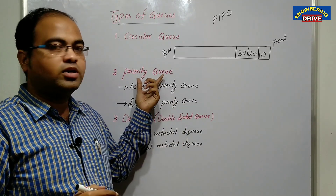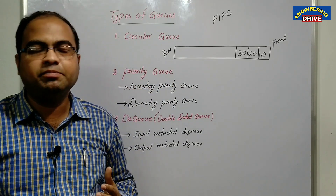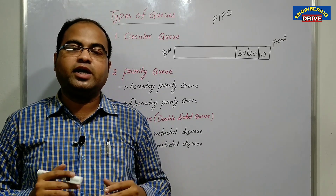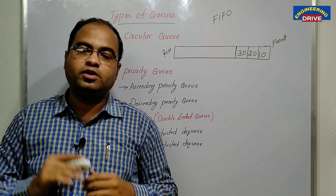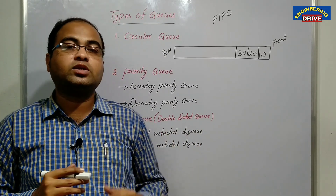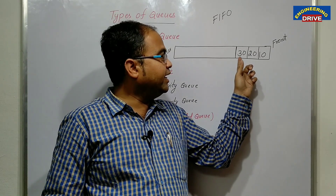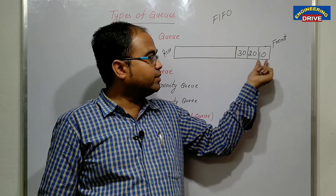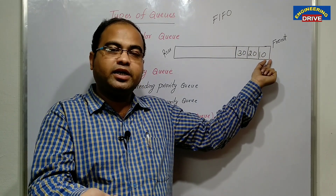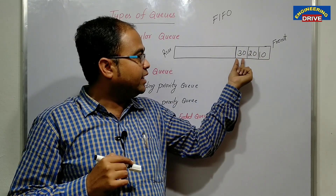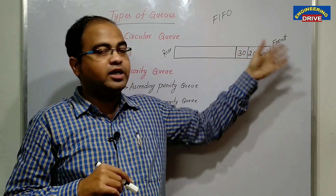The next type of queue is a priority queue. Priority means preference. As we know, a queue follows the strict FIFO condition — the element inserted first will be removed first. But sometimes we want to assign some priority to the elements. For example, if I want to delete 30 first, even though 10 came first and should be deleted first according to FIFO, I can assign high priority to 30, so 30 will be deleted first.